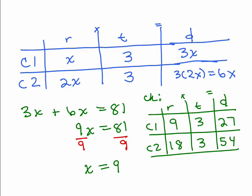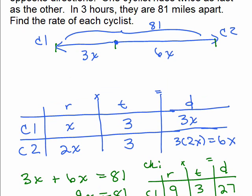All right, so now let's see, would it be true on that picture that cyclist 1 went 27 miles and cyclist 2 went 54? And let's see, 27, 54, would they end up being 81 miles apart from each other? Sure, because 27 plus 54 is 81.